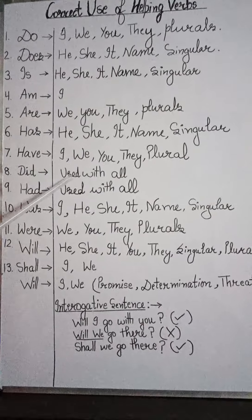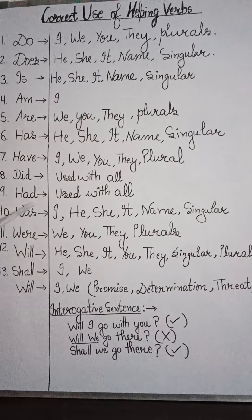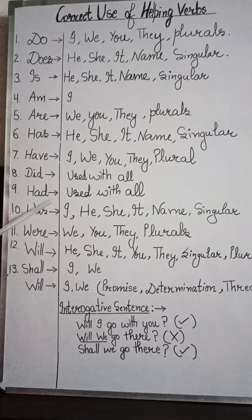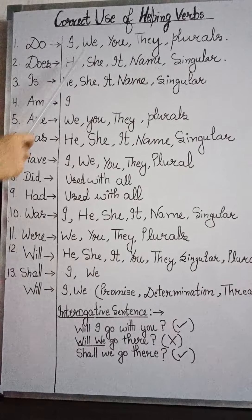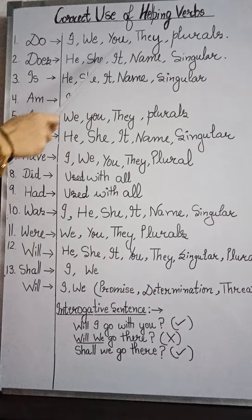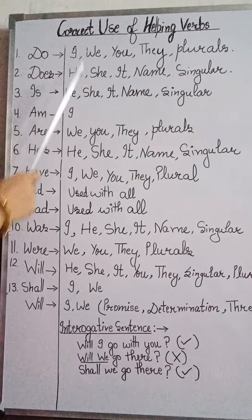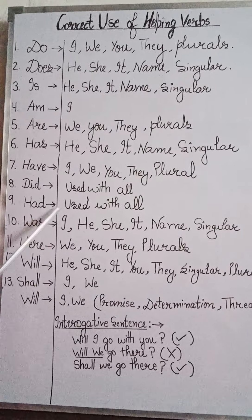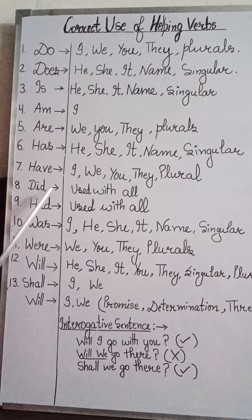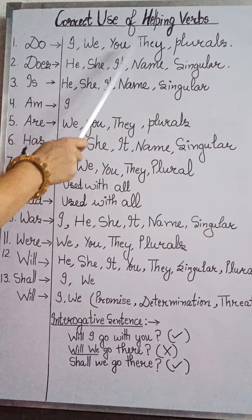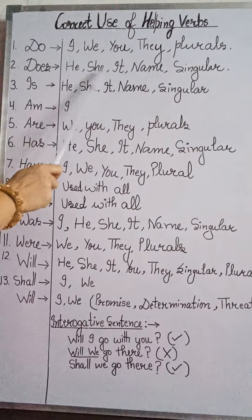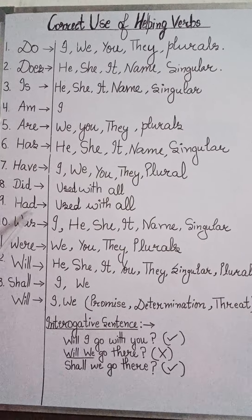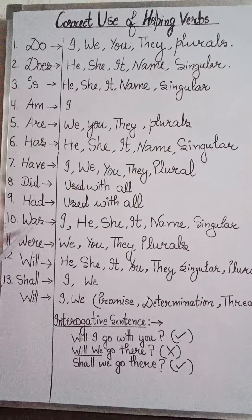उसके बाद 'had' की बात करते हैं। जिस तरीके से 'did' का use सभी के साथ हुआ था, उसी तरीके से 'had' का use भी दोनों ही category के words के साथ किया जाएगा — यानि कि first person, second person के साथ भी और third person के साथ भी। 'Had' जो है वो past की बात करने के लिए use होता है। I, we, you, they, plurals, he, she, it, name और singular — सभी के साथ 'had' का use किया जाता है।